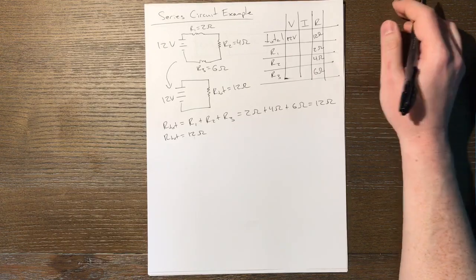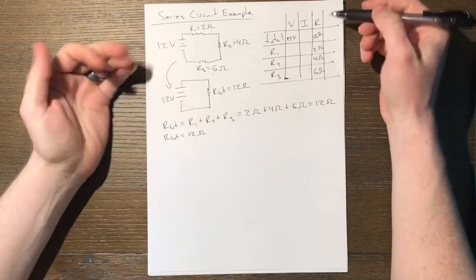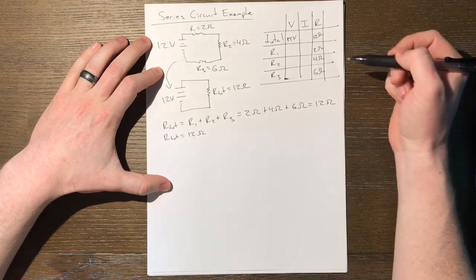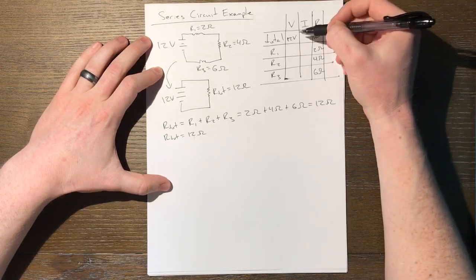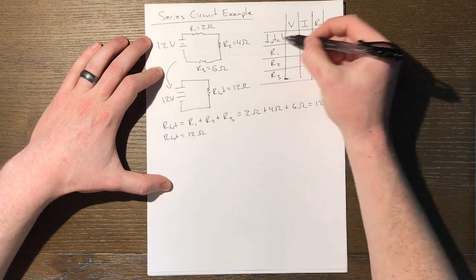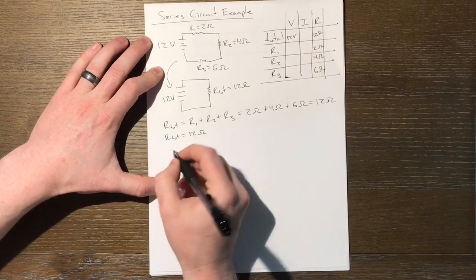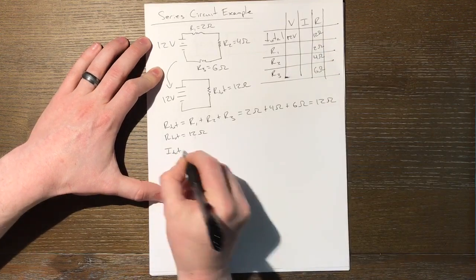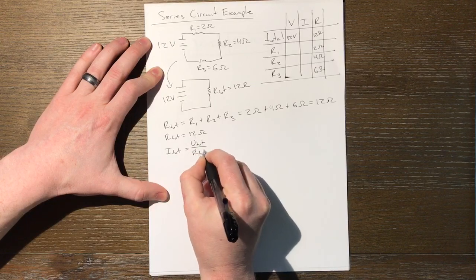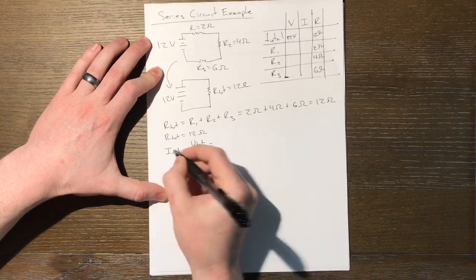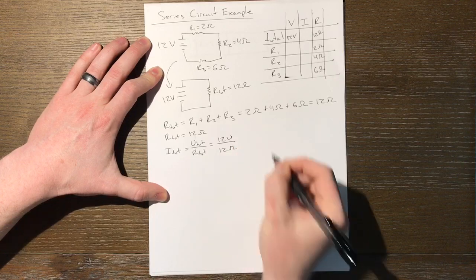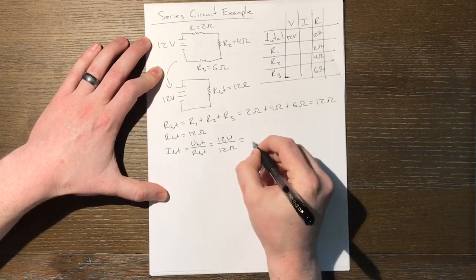And what did I tell you we would do once we found total resistance? We would generally find total current. And if you didn't know this, you could actually look at the data table and it would help you figure out what to do next as well. Any time you have two out of the three variables, V, I, and R, that is if you have one blank spot in a row, you can solve for it. So we know we can solve for I total. Well, I total is given by V total over R total. So I total is going to be V total, 12 volts over R total, 12 ohms.